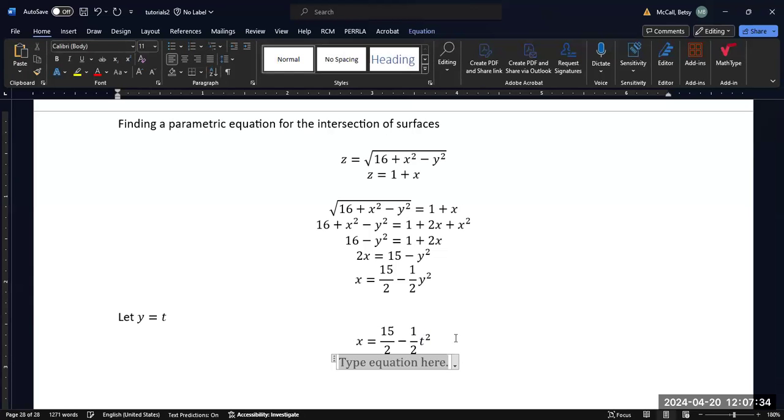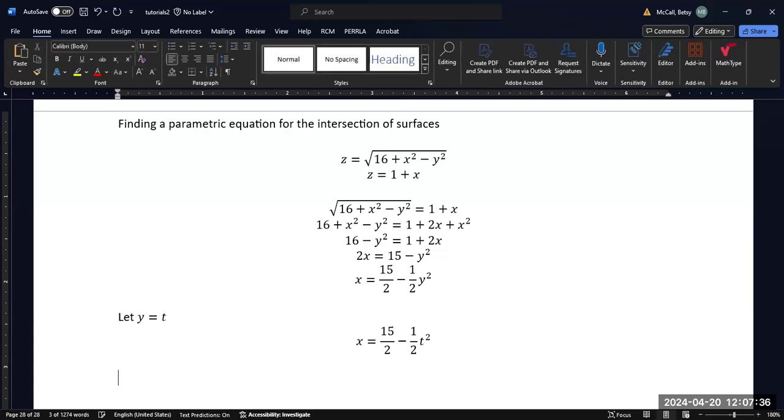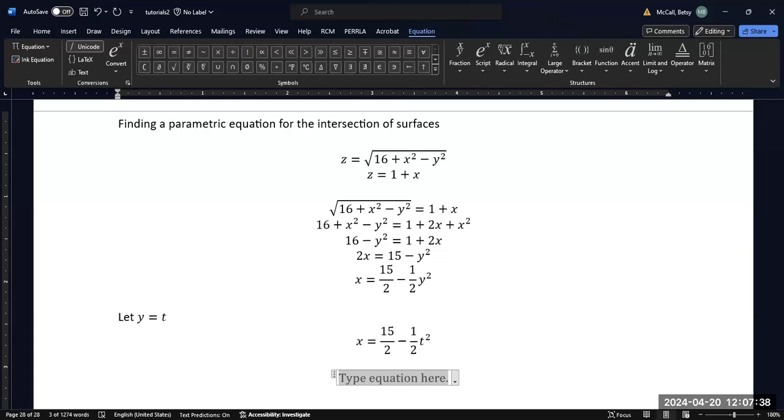And then I can also solve for z. Now, my original z was in terms of x, so it'll be 1 plus my expression for x. And that's going to give me 17 over 2 minus 1 half t squared.